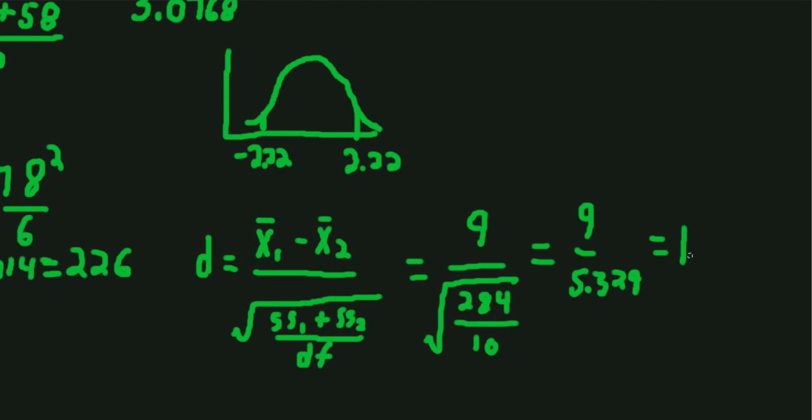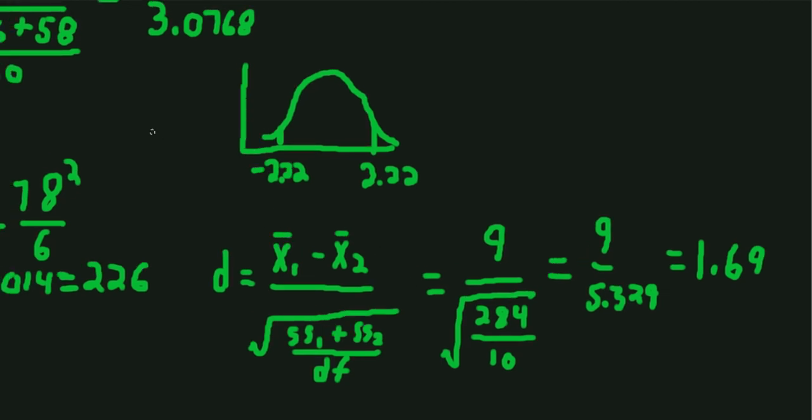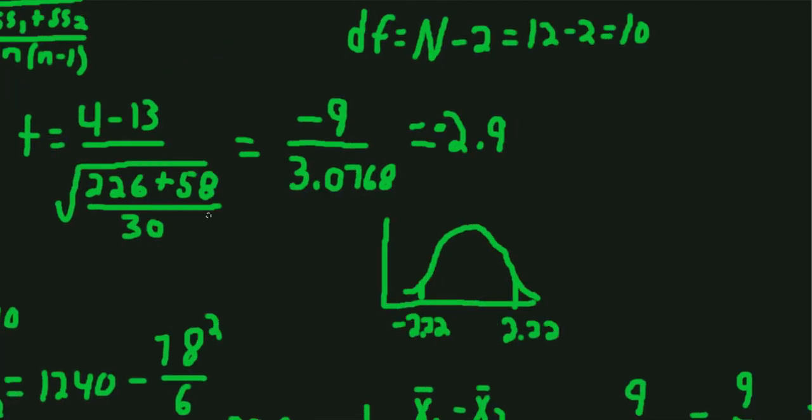Which is a fairly large value for Cohen's D, meaning that these two means are about 1.7 standard deviations, pooled standard deviations apart. Now that's a rather large finding, but these are made up data, so it's no surprise.